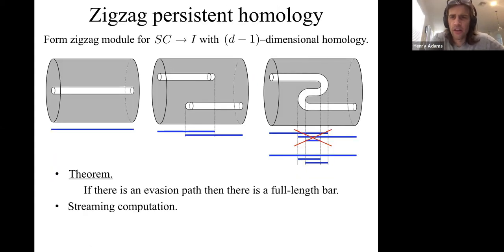To end, zigzag persistent homology is a nice idea here. It gives you a one-sided criterion. You can use zigzag persistence to guarantee there's no evasion path if there's no full-length bar. In other words, if there is an evasion path, then there is a full-length bar. But it doesn't resolve every situation. The situation on the right is one in which there's no evasion path, but we can't use zigzag persistence to guarantee that. So this criterion is no stronger than the criterion we saw in the last video using the blue sheet alpha, but maybe it's a little bit more computationally efficient.